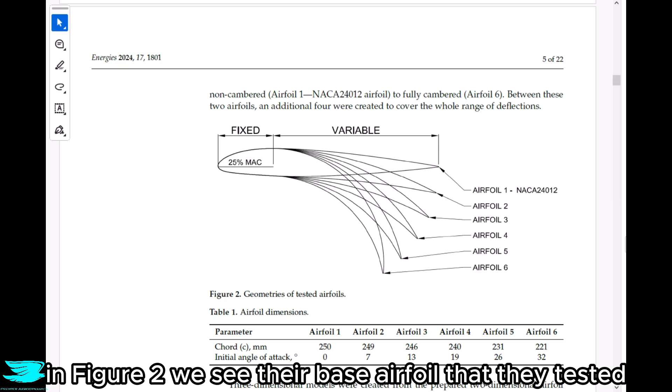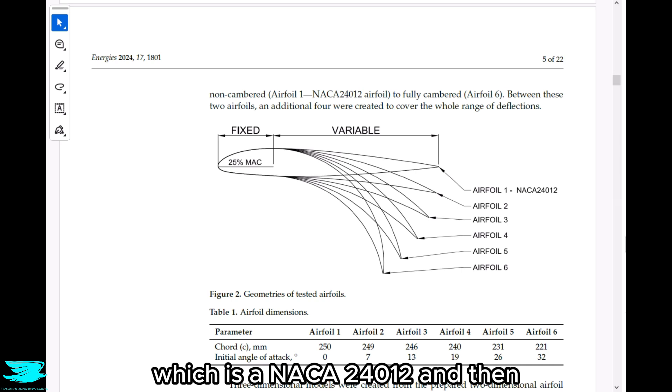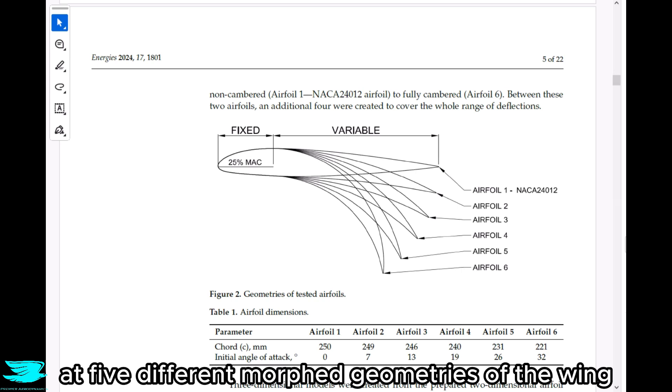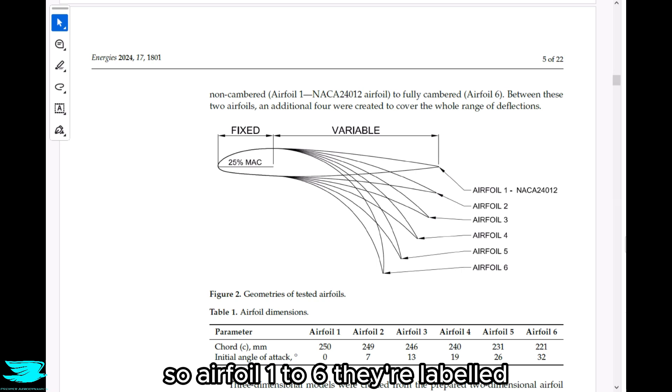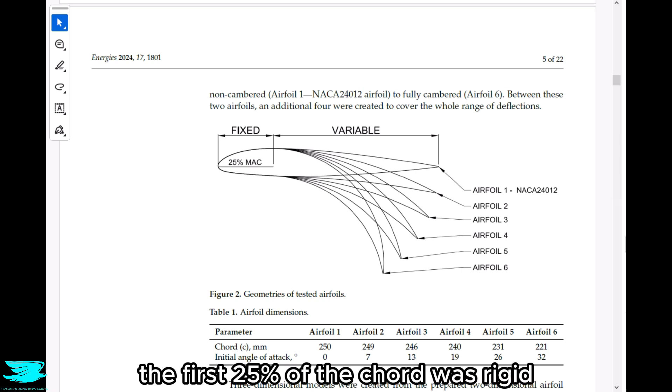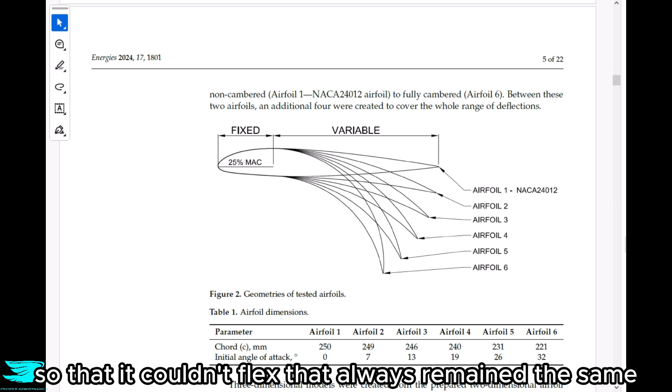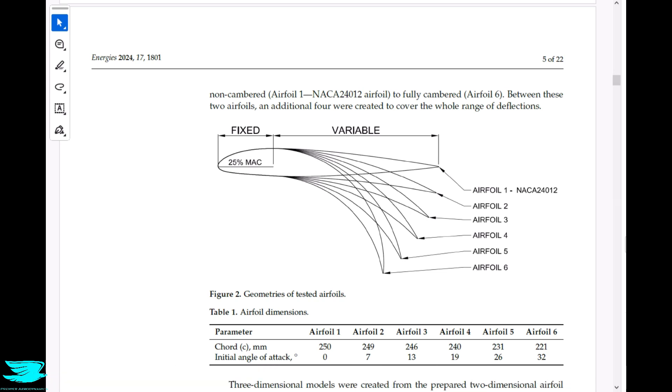In figure two, we see their base airfoil that they tested, which is a NACA 24-0-12, and then five different morphed geometries of the wing. So airfoil one to six, they're labeled. The first 25% of the chord was rigid so that it couldn't flex, that always remained the same among all these different airfoils. But then the rest of the 75% of the chord could flex.